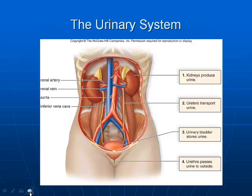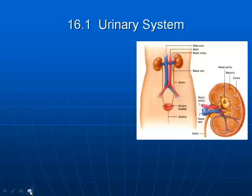The urinary system — let's look at its structure. We have our kidneys, ureters, bladder, and urethra, which is also shared with the reproductive duct. We also have some arteries: the renal artery takes blood to the kidneys, the renal vein takes it from the kidneys back to the heart, and the aorta and vena cava are nearby but not specific to the kidneys.